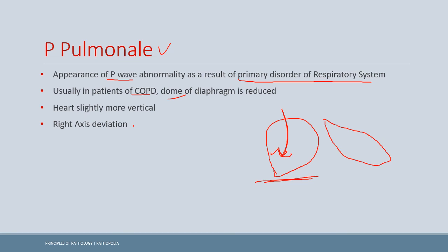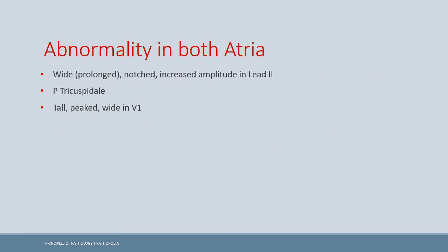When both atria are abnormal, the ECG shows a combination of both abnormalities: the P wave is prolonged and notched due to left atrial abnormality, and has increased amplitude due to right atrial abnormality. P tricuspidale is when the initial component of the P wave is taller than the later component; this abnormality is associated with the tricuspid valve, hence the name P tricuspidale.